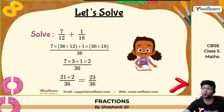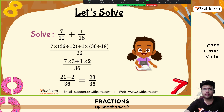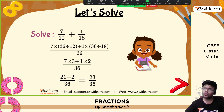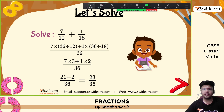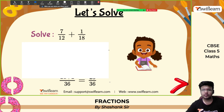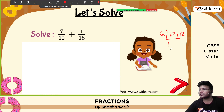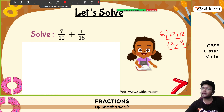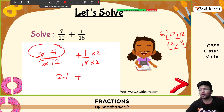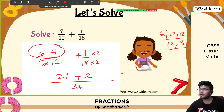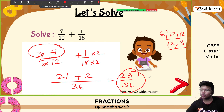Solve: 7 by 12 plus 1 by 18. Find the LCM of 12 and 18. 6 twos are 12 and 6 threes are 18, so LCM is 6 into 2 into 3 which equals 36. To make 12 into 36, multiply by 3. To make 18 into 36, multiply by 2. So: 7 threes are 21 by 36, plus 1 twos are 2 by 36. Add them: 21 plus 2 is 23 by 36. This cannot be simplified, so 23 by 36 is the final answer.